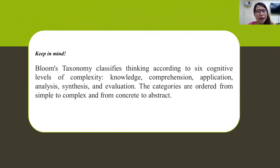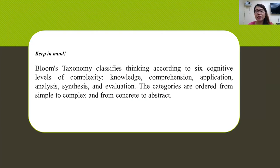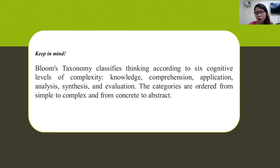Please keep in mind that Bloom's taxonomy classifies thinking according to six cognitive levels of complexity: Knowledge, Comprehension, Application, Analysis, Synthesis, and Evaluation. The categories are ordered from simple to complex and from concrete to abstract.